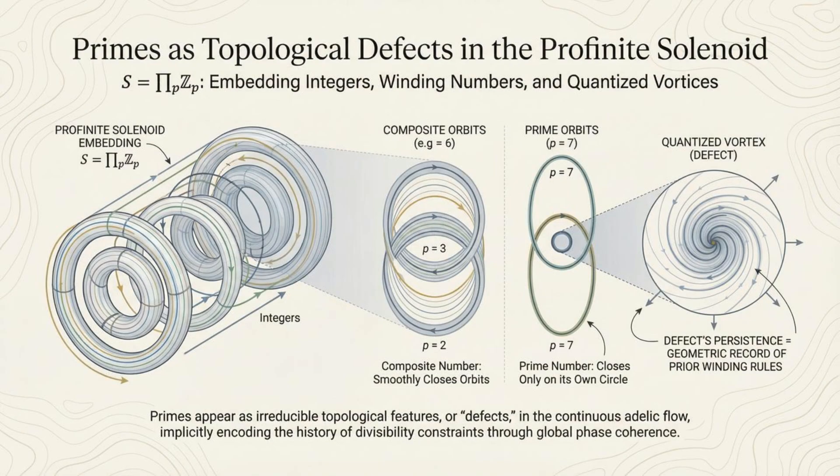Primes appear as topological defects in the profinite solenoid. Composite orbits smoothly close while prime orbits close only on their own circle. Primes are irreducible topological features, implicitly encoding the history of divisibility constraints through global phase coherence.